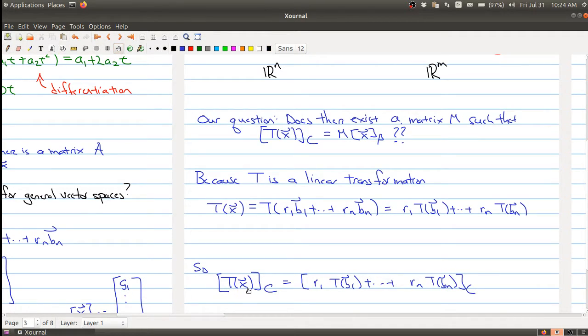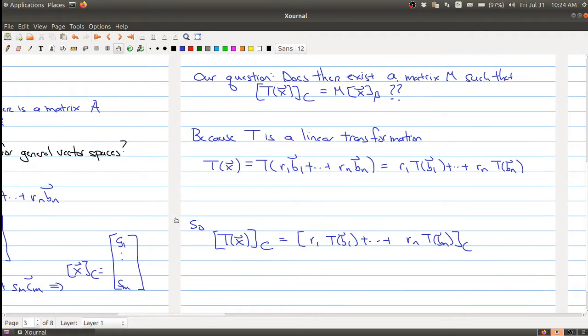So we were writing, we want to figure out what T(x) was with respect to the C coordinates. We could rewrite it in this particular form. But another way to think about this is we can actually factor out all the coefficients.